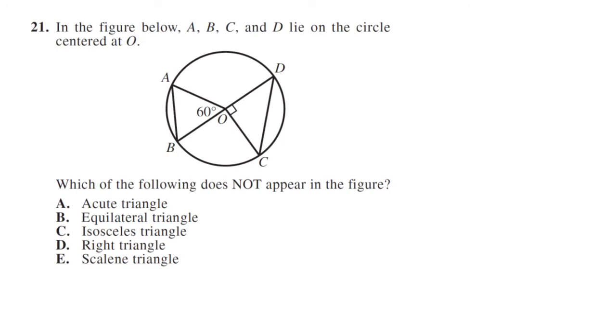Which of the following does not appear in the figure? An acute triangle has zero to 90 degree angles. So 60, 60, 60 is an equilateral triangle because they're all equal. So we have an acute and equilateral.